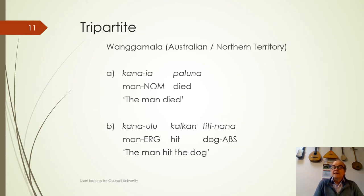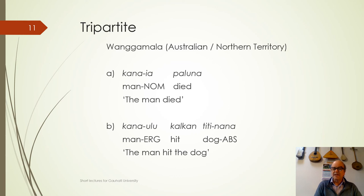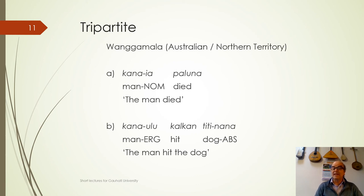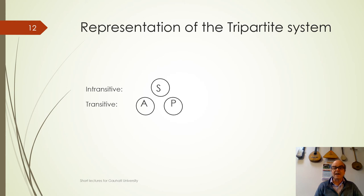There are languages which do something else — mark S, A and P all differently. In Wangamala, also spoken in the Northern Territory of Australia, slightly further north of Arnte, you have a different marker for S, A and P. 'The man died' — Kana ia — where ia marks the man as an S argument. 'The man hit the dog' — Kana ulu — because the man is the A argument, he is marked differently. And the dog also has a different marker — Titi nana. So there are three different markers in this language, very complicated to learn.